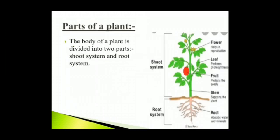Plants are one of the largest group of living things. The body of a plant is made up of different parts that perform different functions. They help plants to grow, obtain food and stand upright. The body of a plant is divided into two parts: shoot system and root system.